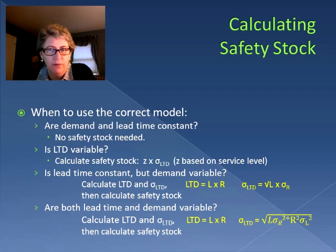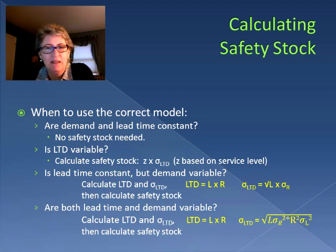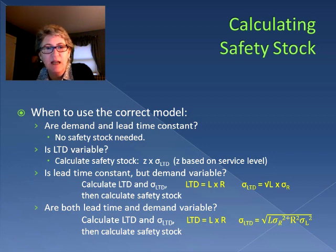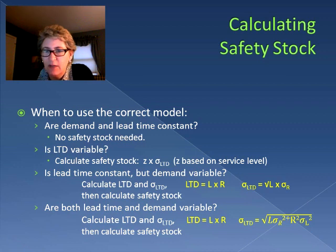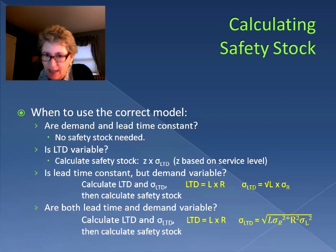So when do you know which model to use for calculating safety stock? First: if both demand and lead time are constant, no safety stock is needed. If lead time demand is variable and already given, calculate safety stock directly using z times the standard deviation of lead time demand. If lead time is constant but demand is variable, calculate lead time demand and its standard deviation, then calculate safety stock. If both lead time and demand are variable, calculate lead time demand and its standard deviation using the full formula, then calculate safety stock.